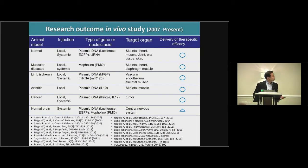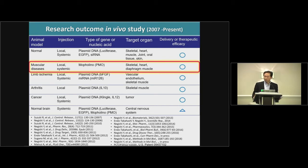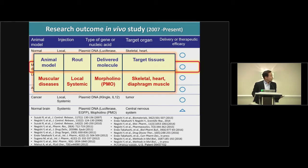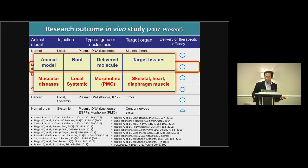This slide shows our research outcomes in people's study. Today, I have not enough time, so I have focused on muscular dystrophy. The delivery routes are local and systemic. The delivered molecule is morpholino oligonucleotide, so-called PMO, and the target tissues are skeletal muscle, heart, and diaphragm muscle.